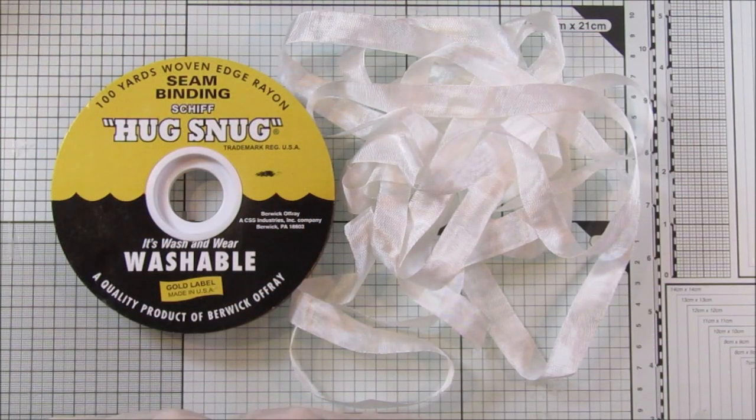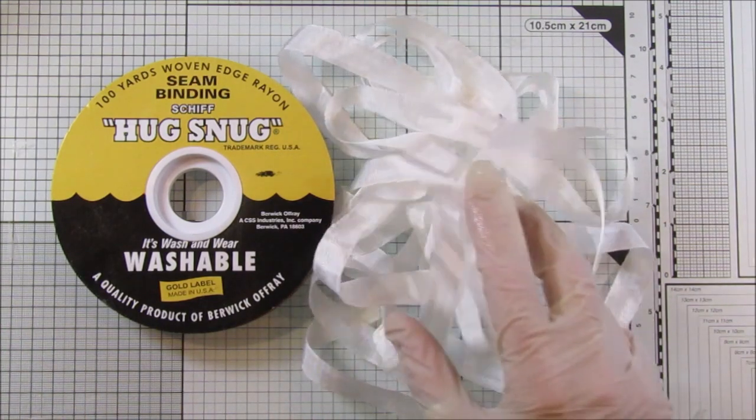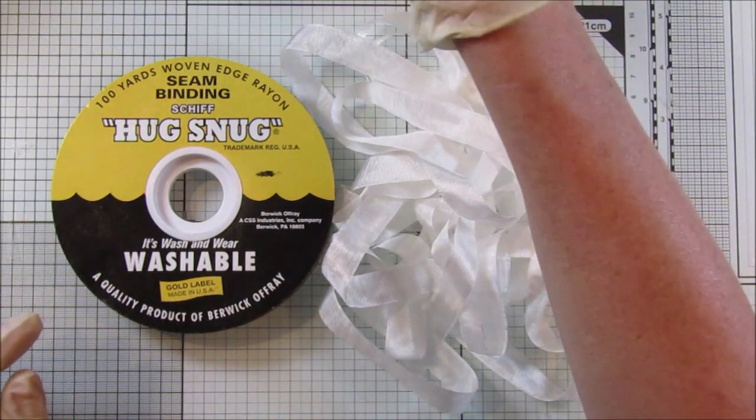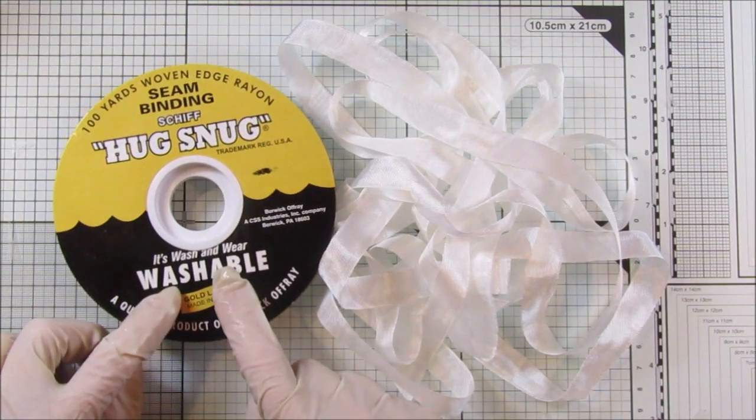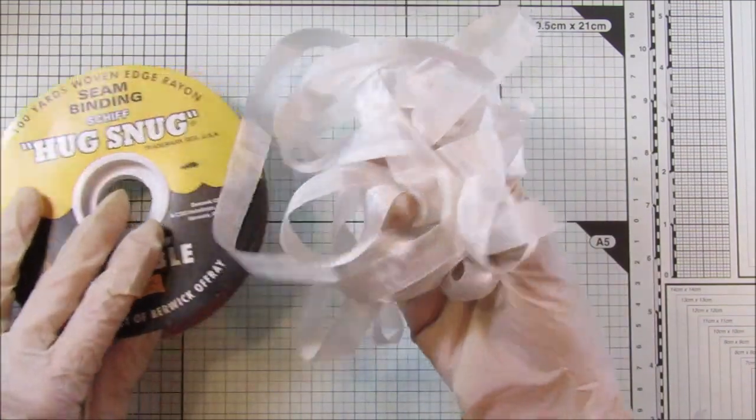Hi guys, welcome back to my channel. It's G from Happiness and Crafting. So today is a quick video. I'm just going to show you quickly how I color my seam binding. I'm going to be doing it with some distress oxide inks, the spray ink here.